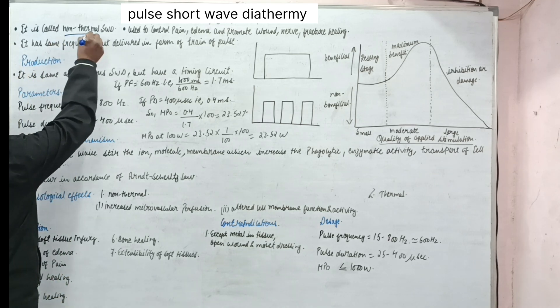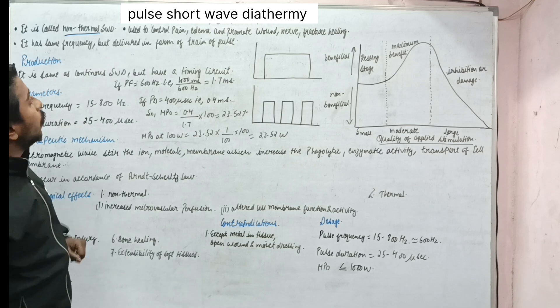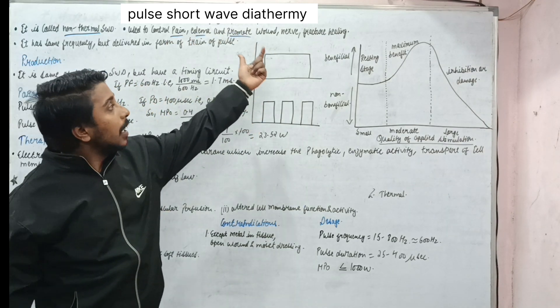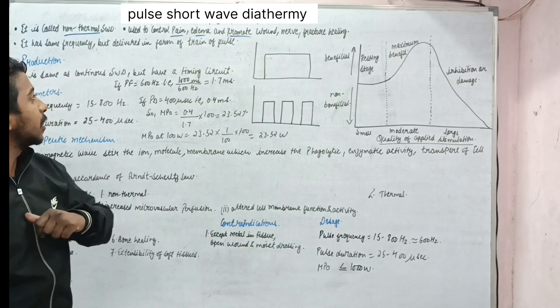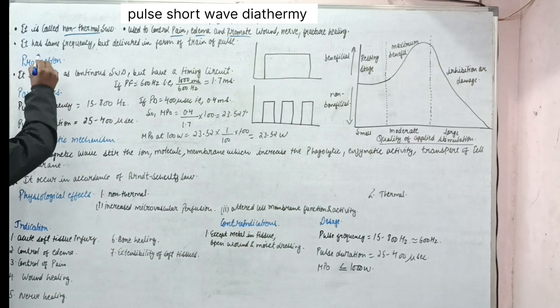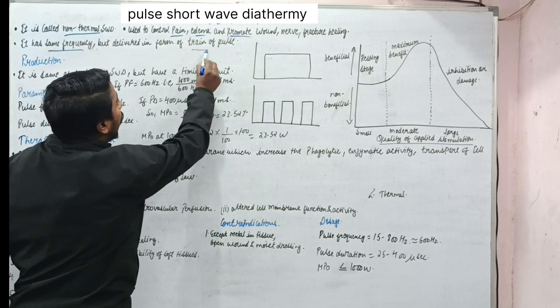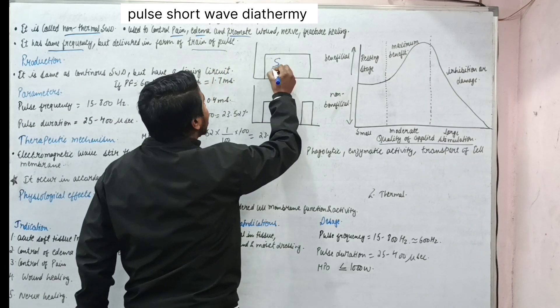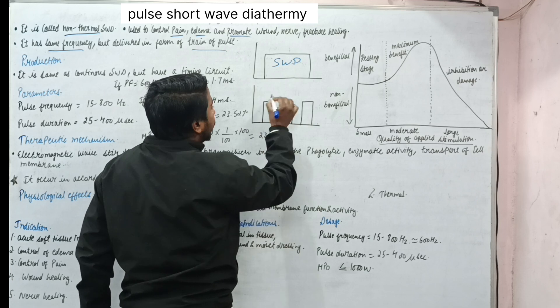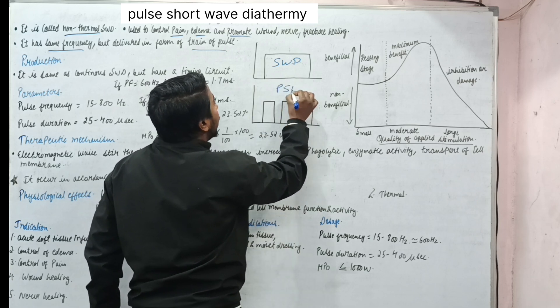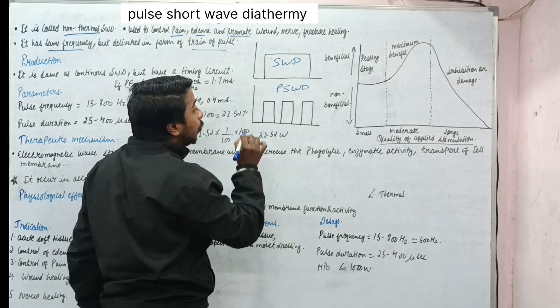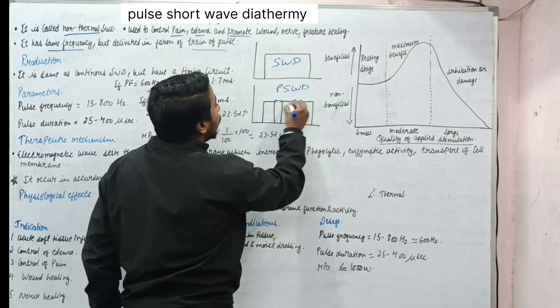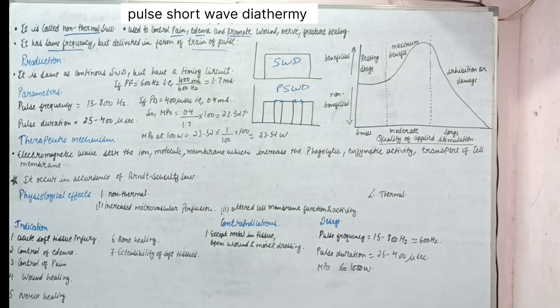It is also called non-thermal SWD. It is used to control pain, edema, and promote wound, nerve and fracture healing. It has same frequency but delivered in the form of train of pulse. So this was the continuous SWD, but this one is pulsed SWD. Why? Because it does not have continuous production. It is having this rest period, this rest period.